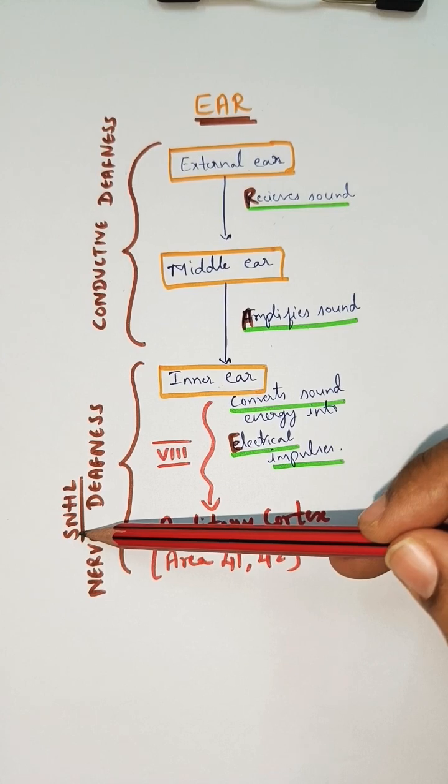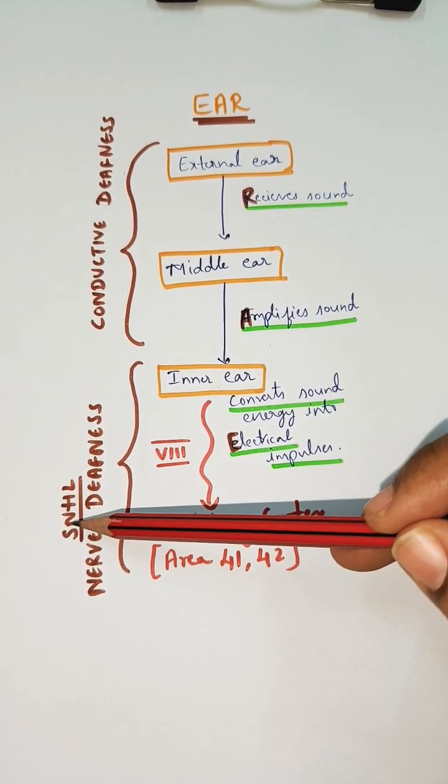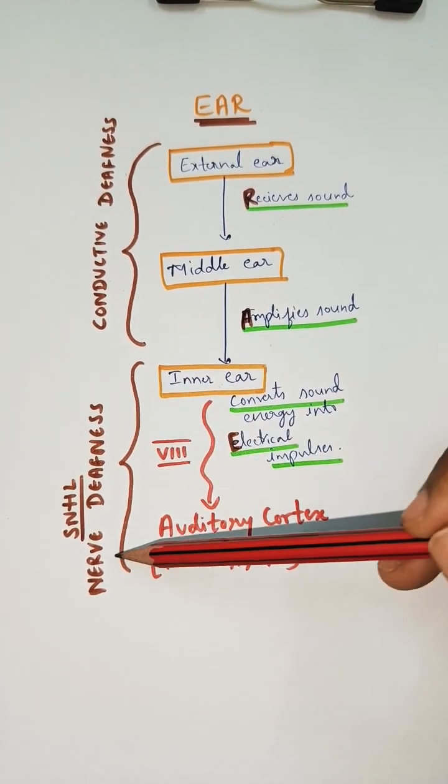Sensory meaning the receptors are affected, or the nerve is affected, and if there's deafness because of this, we call it sensory nerve.